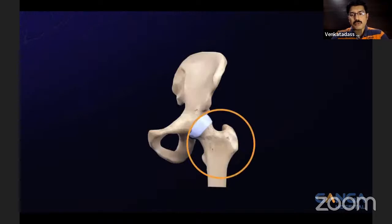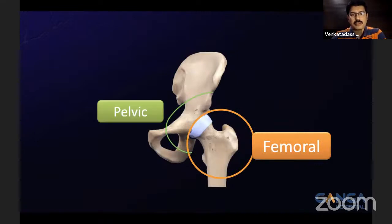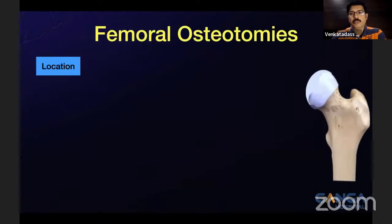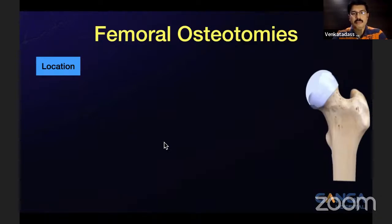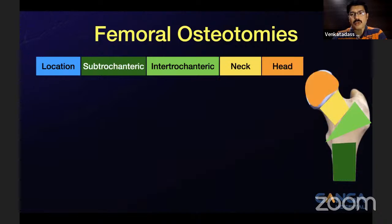The osteotomies around the hip are broadly divided into femoral osteotomies, which I am focusing on today, and pelvic osteotomies, which will be covered in the next session. Femoral osteotomies can be broadly divided into various types based on the location: sub-trochanteric, inter-trochanteric, at the neck level, or at the head level. This is the classification based on the level of osteotomy.